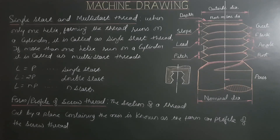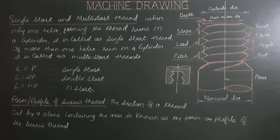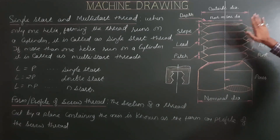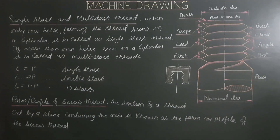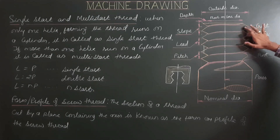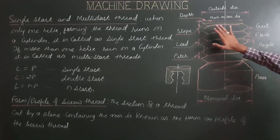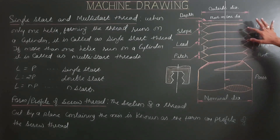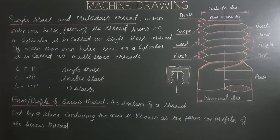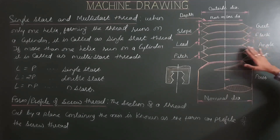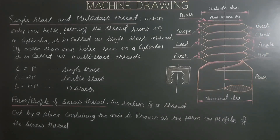The form or profile of a screw thread is the section of a thread cut by a plane containing the axis. It represents the cross-sectional area of the threaded part. For example, if you cut the screw with a section plane passing through the axis, you get triangular cross-sections — so it is a triangular thread profile.